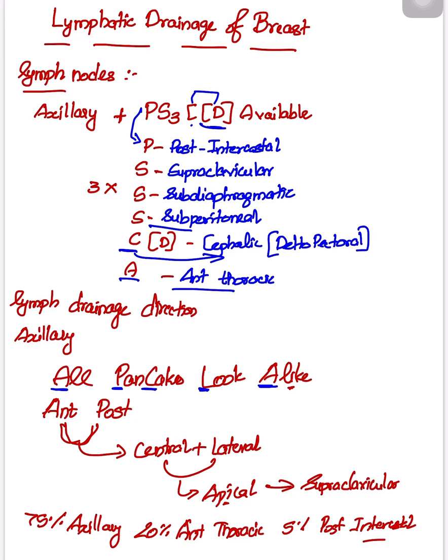So, axillary PS3CD available: P stands for posterior intercostal, S for supraclavicular, S for subdiaphragmatic, S for subperitoneal, CD for cephalic or deltopectoral, and A for anterior thoracic. Now for lymphatic drainage direction, the main group, as